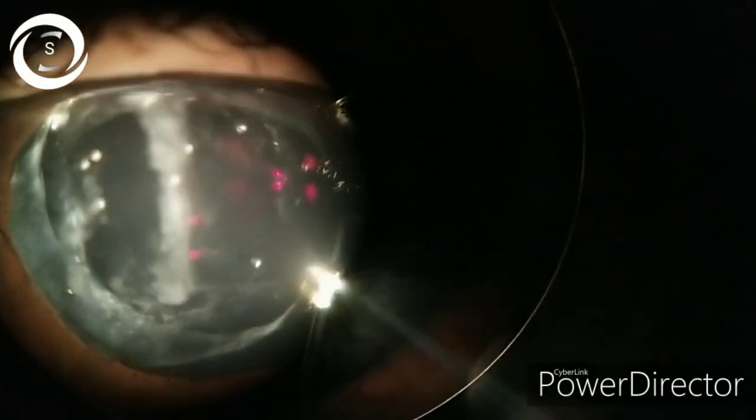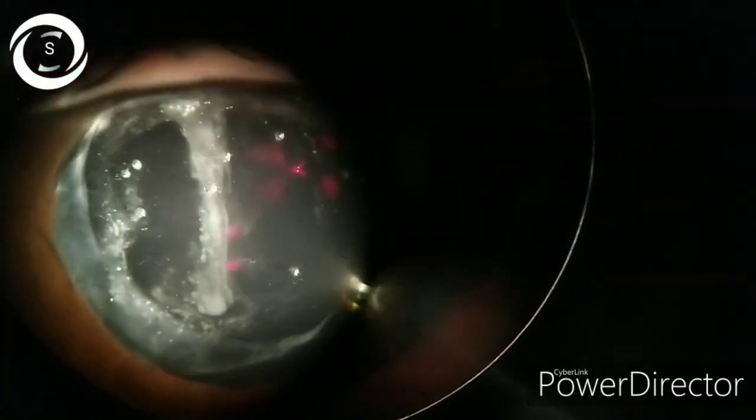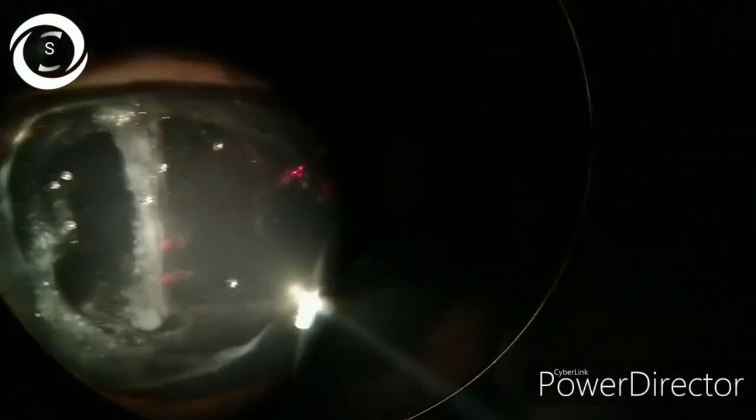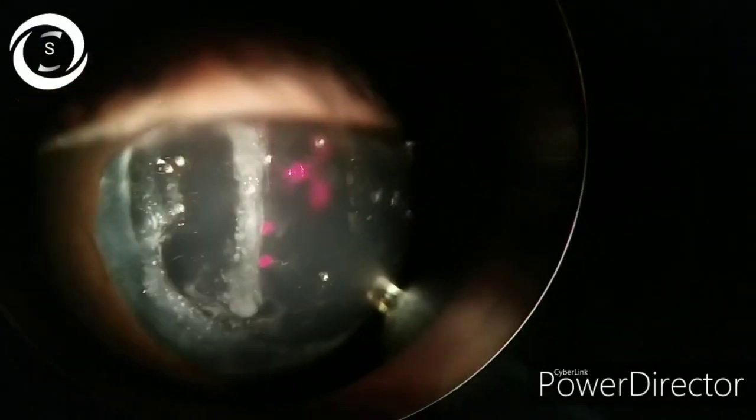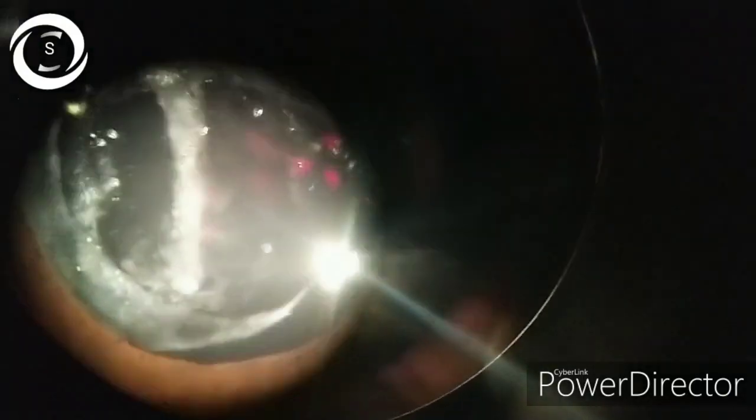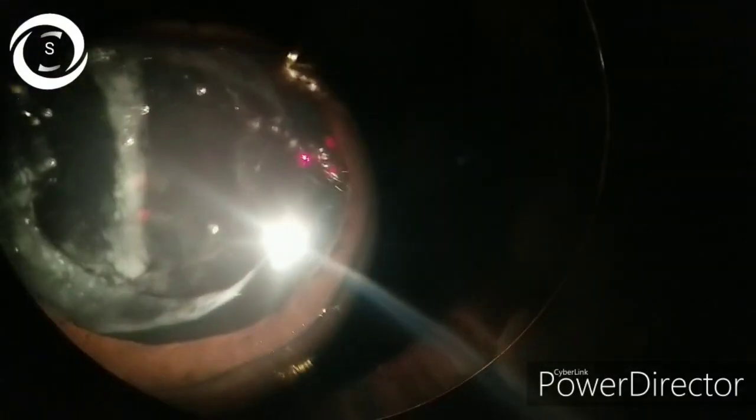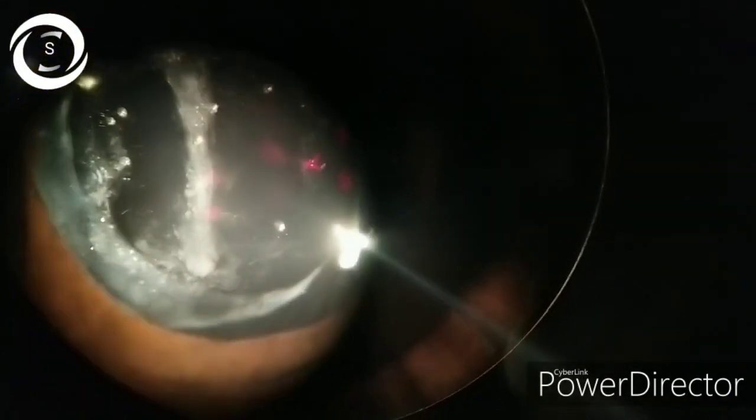Then try to make capsulorhexis slightly smaller than the intraocular lens optic and implant the IOL in the bag. Use hydrophobic material with square haptics. This creates a shrink-wrap effect of the anterior capsule over the IOL optic, thus lens epithelial cells are unable to migrate posteriorly and cause PCO.